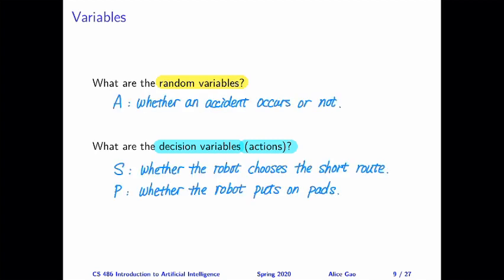Here are the answers. We have one random variable about whether an accident occurs or not — this is completely not in our control, it's defined by nature. Let's use A to denote this random variable. Then we have two things that are in our control: one is whether the robot chooses the short route or the long route, using S (true for short route, false for long route). The other decision is whether to put on pads or not, using P (true when the robot puts on pads, false otherwise).